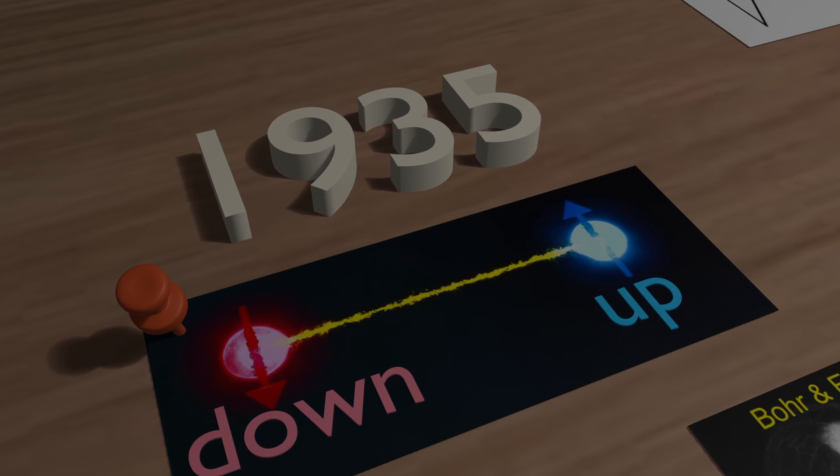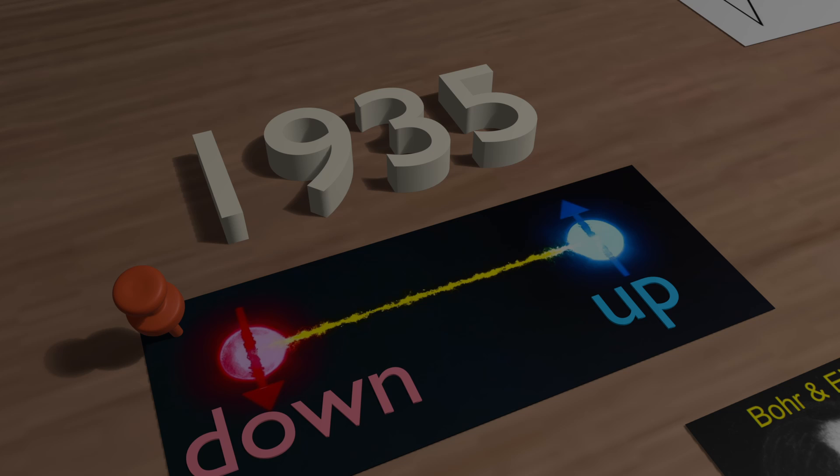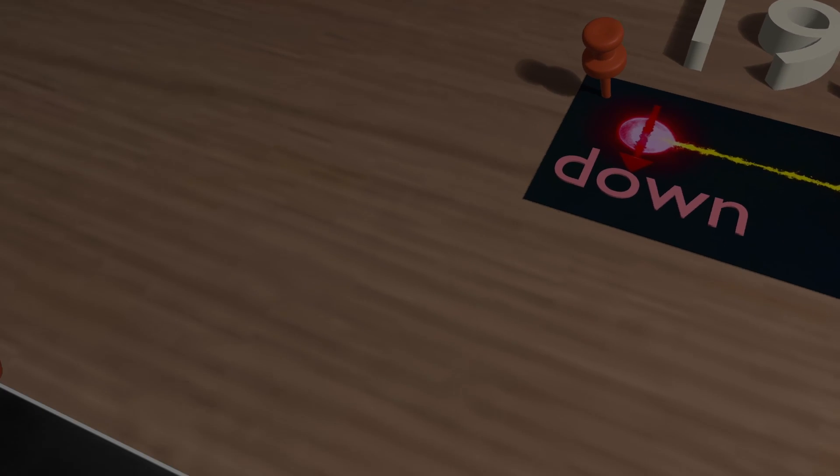For example, if you measure one particle spin to be up, the other particle will instantly be spin down, even if it's light years away.